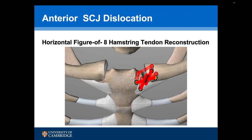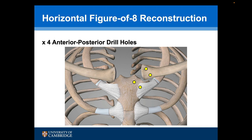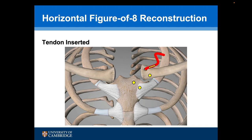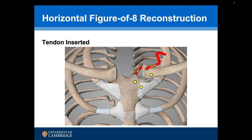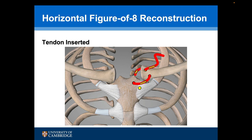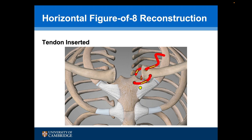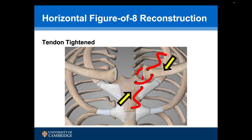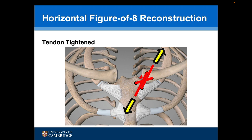The preferred reconstruction I like to undertake is a horizontal figure-of-eight hamstring tendon reconstruction. Two 3.5mm drill holes are made anterior to posterior on the medial end of the clavicle and also the sternum. The hamstring graft is then threaded anterior to posterior through the superior clavicular drill hole, then retrieved posteriorly and passed from posterior to anterior through the superior sternal drill hole. The tendon is then retrieved and passed through the inferior clavicular drill hole from anterior to posterior, retrieved posteriorly and then passed posterior to anterior through the inferior sternal drill hole. Once the tendon has been passed, the ends are pulled tight, reducing the joint. The joint is then cycled and the tendon tightened, and the ends of the tendon are sutured together.